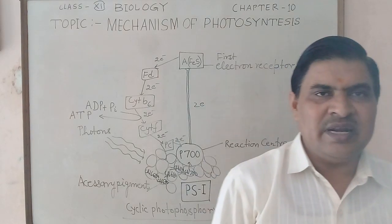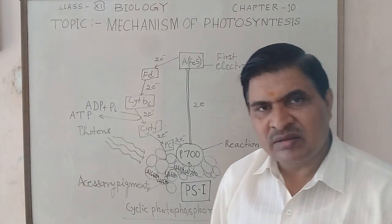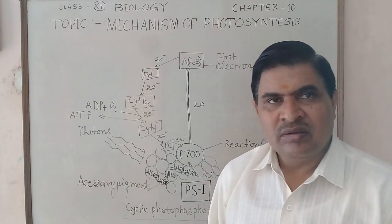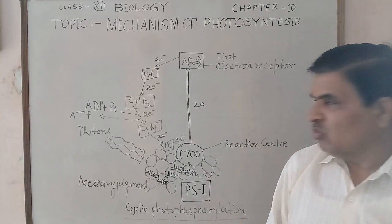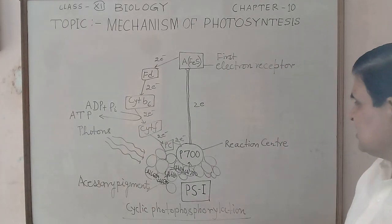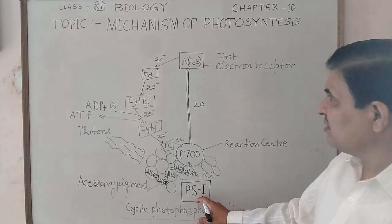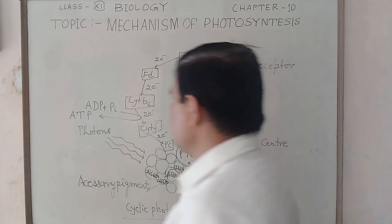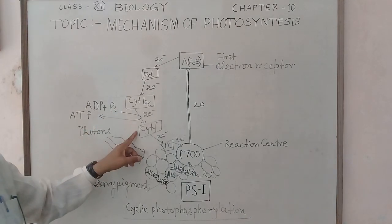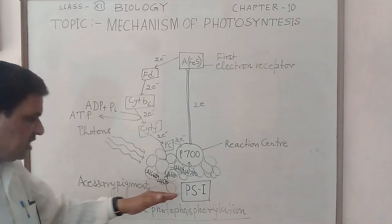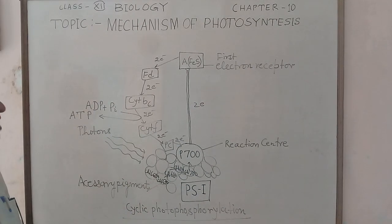Photosystem I absorbs longer wavelength photons around 700 nm. The electron transfer between cytochrome B6 and cytochrome F produces ATP, and this is why Photosystem I is associated with cyclic photophosphorylation.